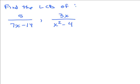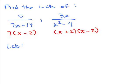Find the least common denominator of 5 over (7X minus 14) and 3X over (X squared minus 4). We always want to begin by factoring the denominators. The first one factors as 7 times (X minus 2). The second is a difference of two squares, so it's (X plus 2) times (X minus 2). Building it up from the first denominator, you need a 7 and an X minus 2. Looking at the second denominator, you also need an X plus 2. You already have the X minus 2, so the LCD is 7(X minus 2)(X plus 2).